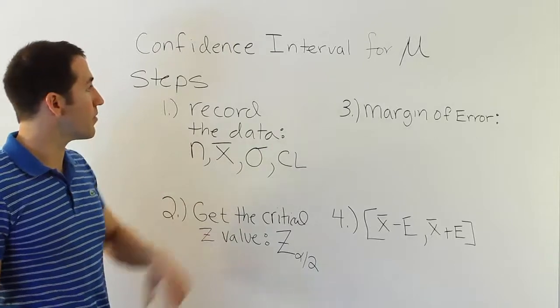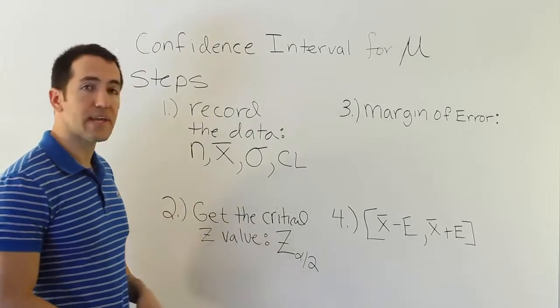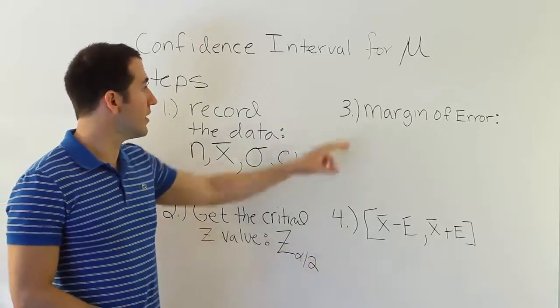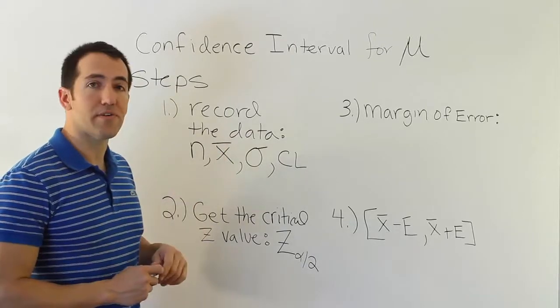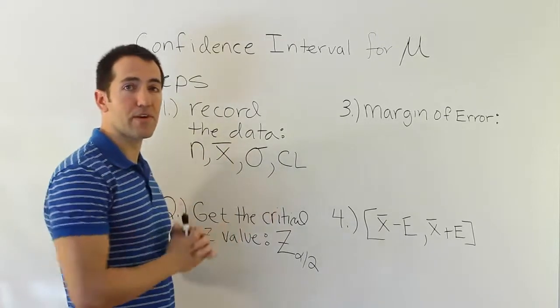Now step 3, after we have this critical table value z_{α/2}, step 3 is to calculate the ever-important margin of error. This is what gives us the width in our interval.